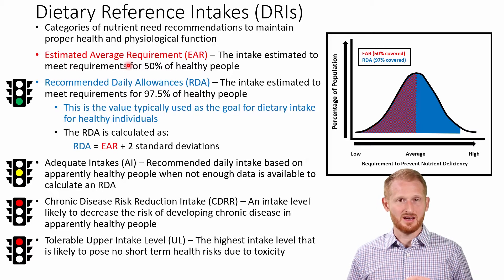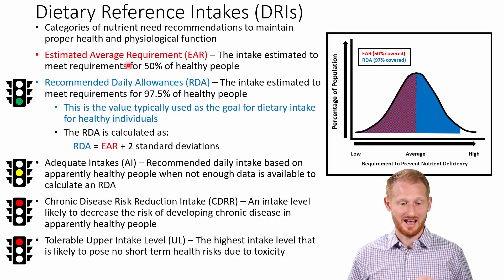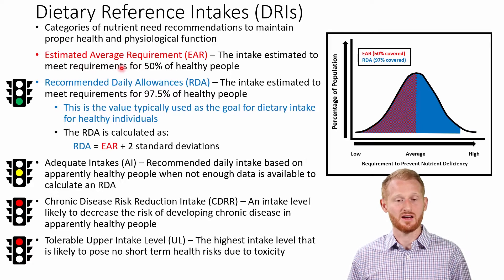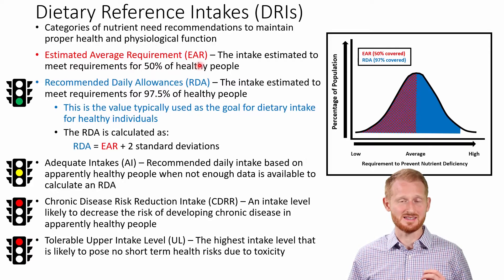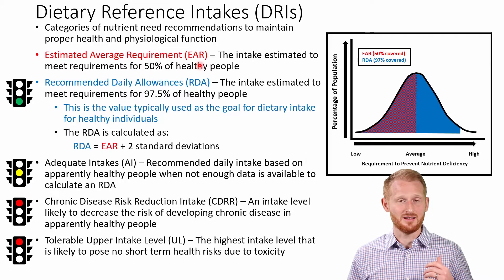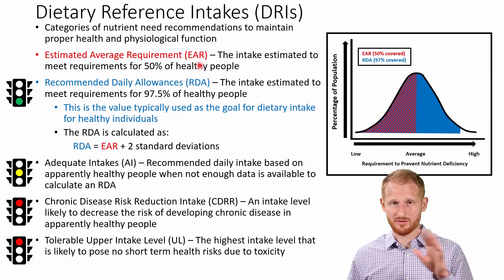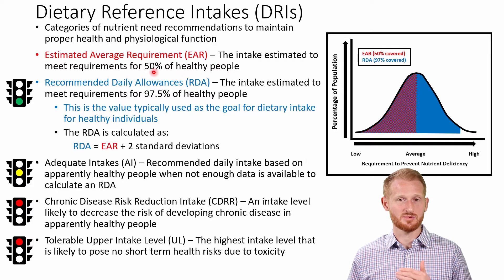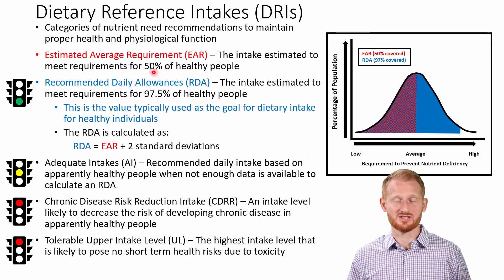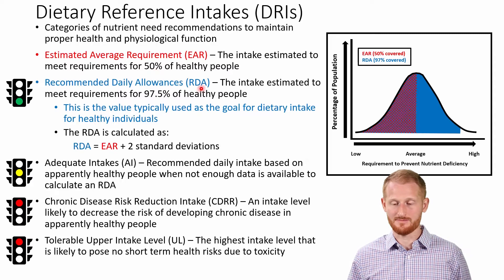The first category of a DRI is called the Estimated Average Requirement, or the EAR. This is the level of need of whatever nutrient you're talking about — the level of need that would satisfy 50% of the population, so the bottom half of the population for that nutrient.